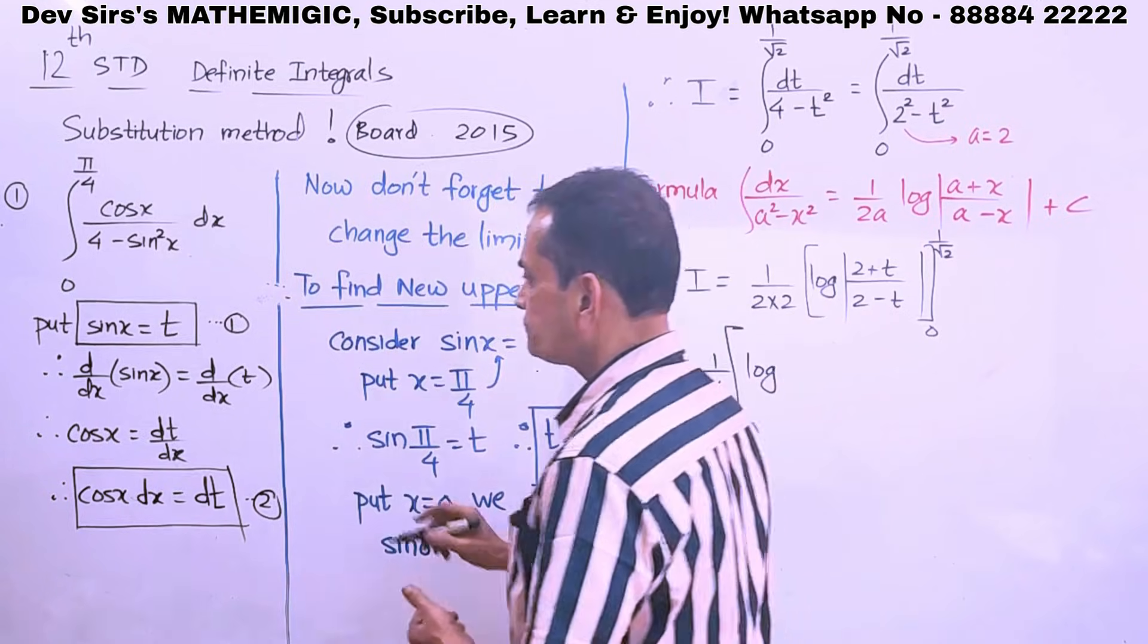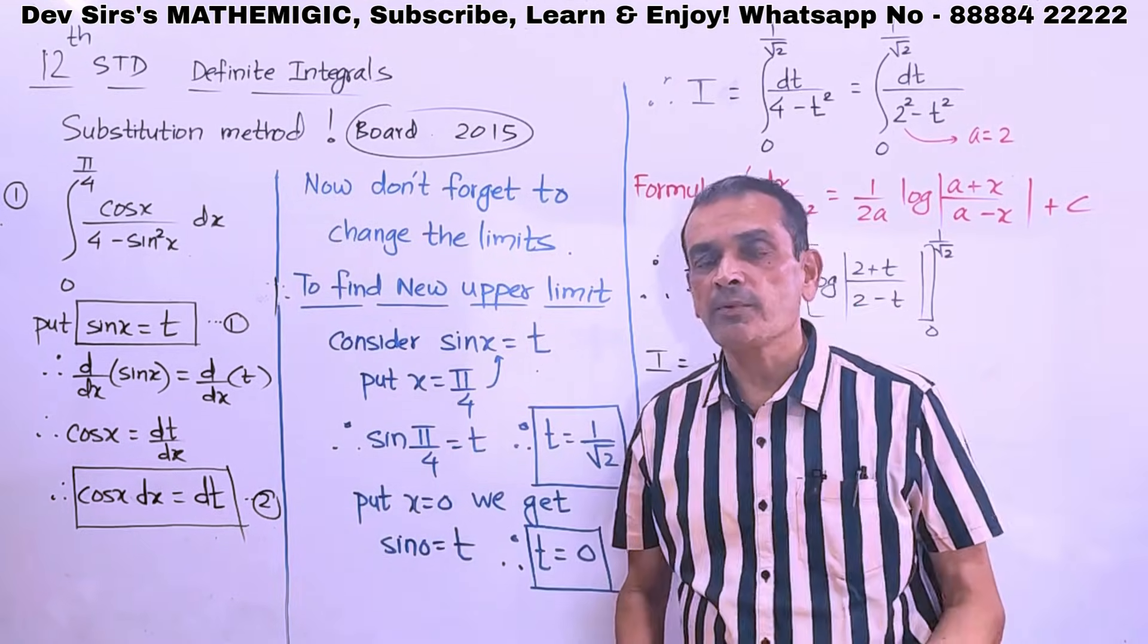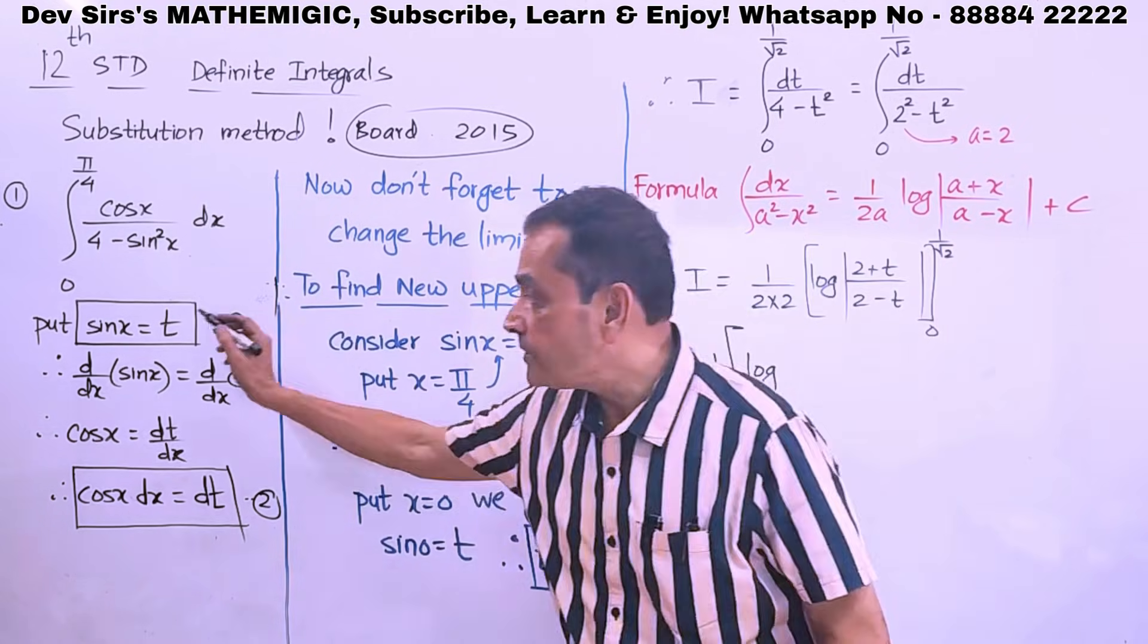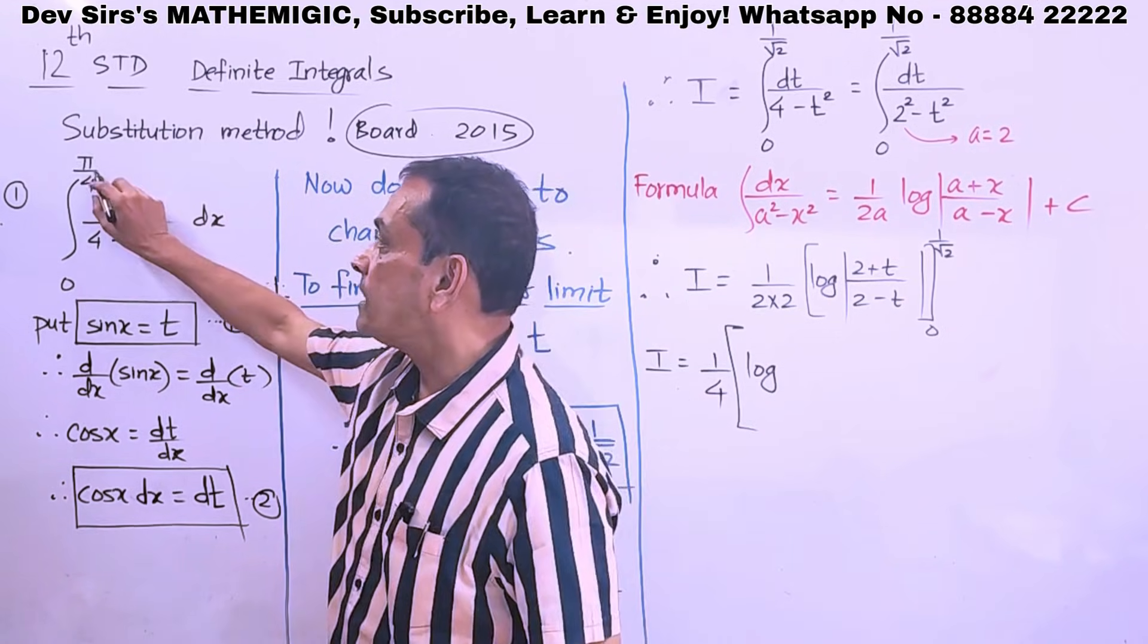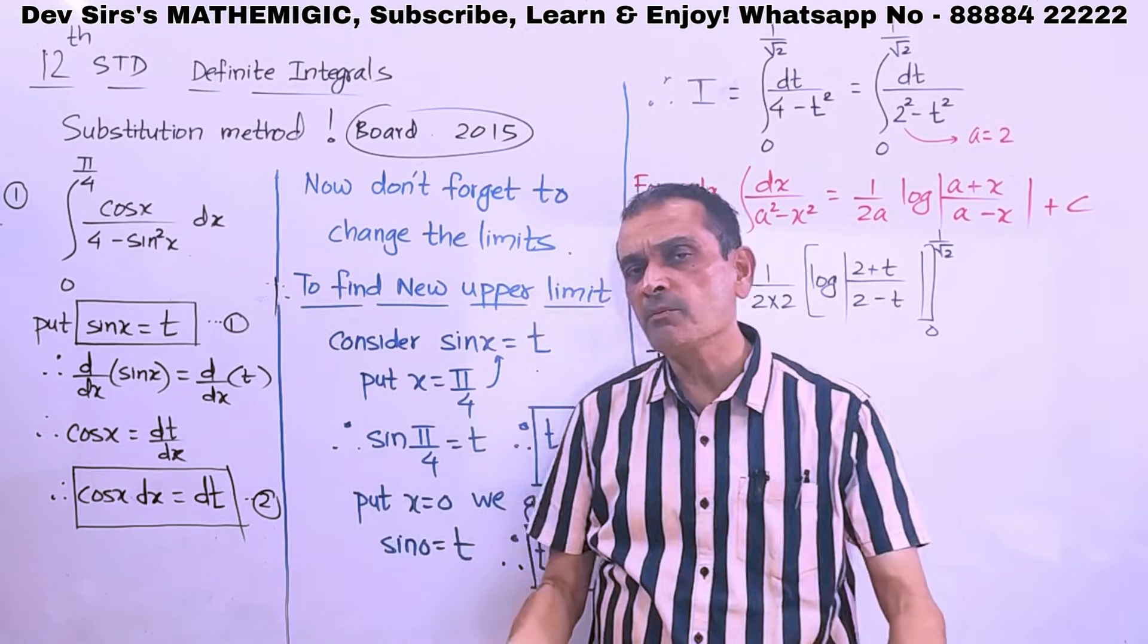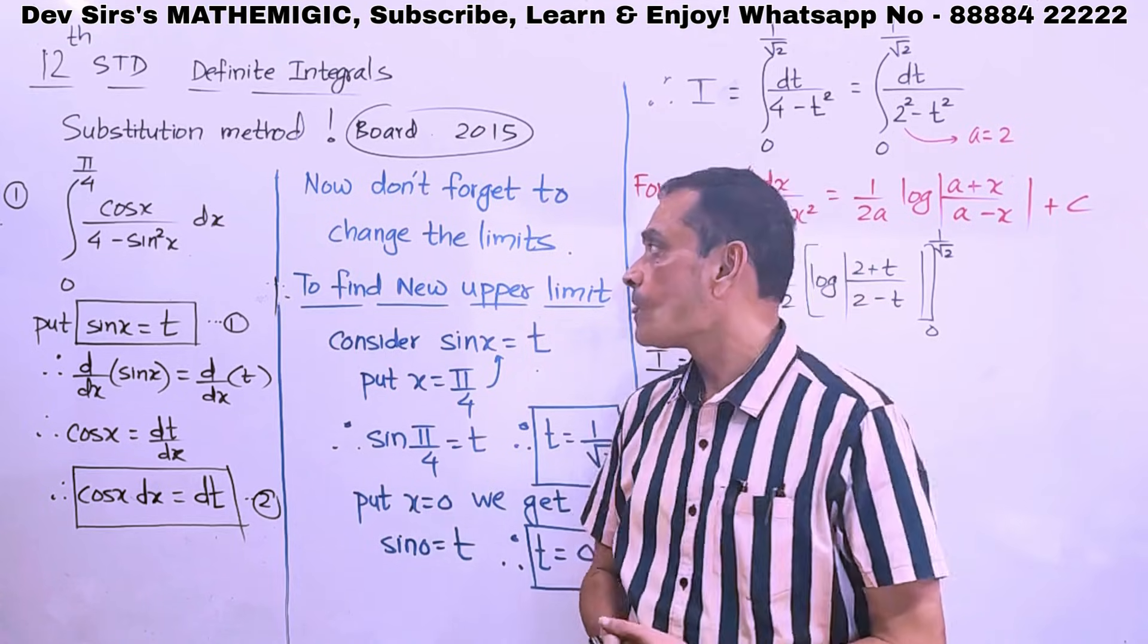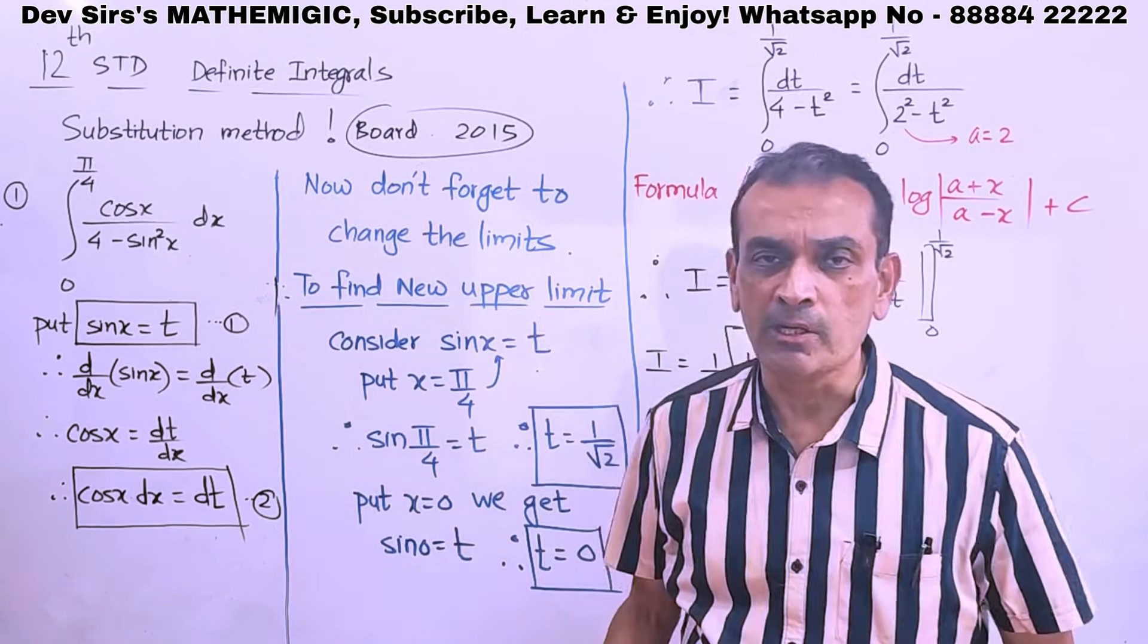Let's go ahead now. These are the basic substitutions. Now, there is a very important step in definite integration. And that step is, after making the substitution, you have to change the limits. This is the upper limit and this is the lower limit. So, after substitution limits also change in integrals. Don't forget that. Otherwise, the full problem will go wrong. Now don't forget to change the limits. How do we find the new limits?